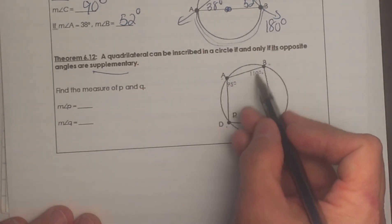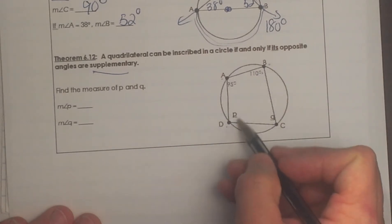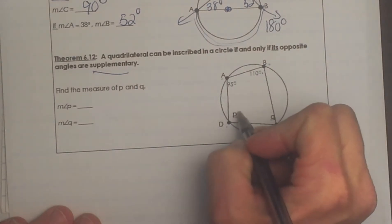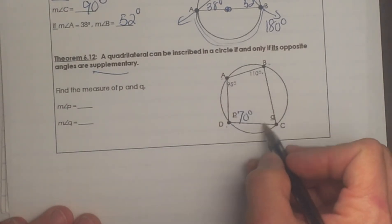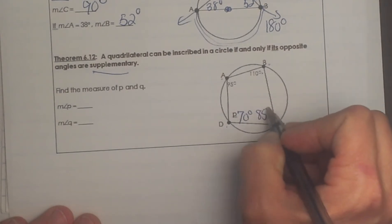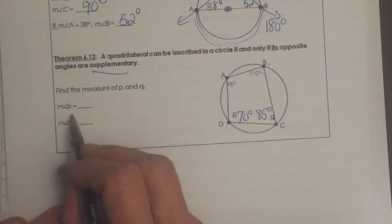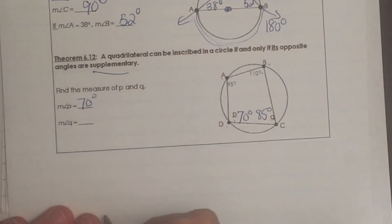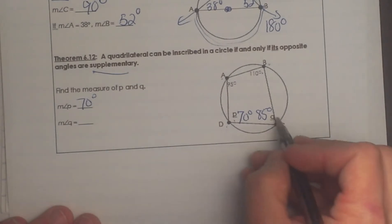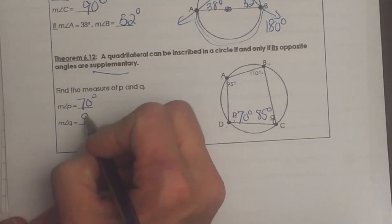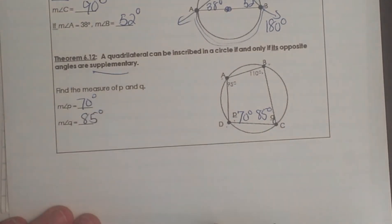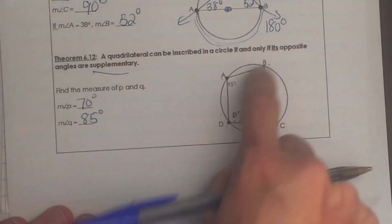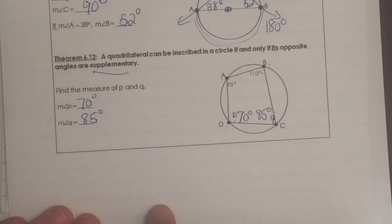So if this one is 110 and this one has to help it add up to 180 so this must be 70 and this is 95 and this is unknown so this must be 180 minus 95 which is 85. So let's look over here so angle P is 70 and angle Q which is 85 and that is how you find those opposite angles in a quadrilateral that is inscribed.